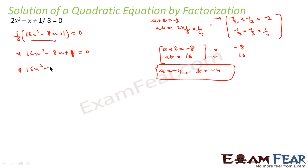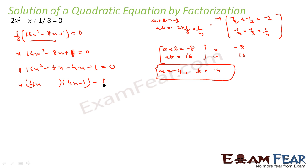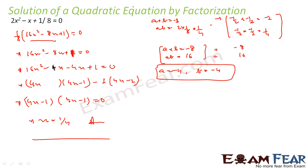So I can write: 16x squared minus 4x minus 4x plus 1 equals 0, because minus 4x minus 4x equals minus 8x, and minus 4x times minus 4x equals 16x squared. Taking 4x common gives 4x minus 1, and taking minus 1 common also gives 4x minus 1. This is nothing but (4x minus 1) times (4x minus 1) equals 0, so x equals 1/4. Very simple — I wrote minus 8x as minus 4x plus minus 4x.